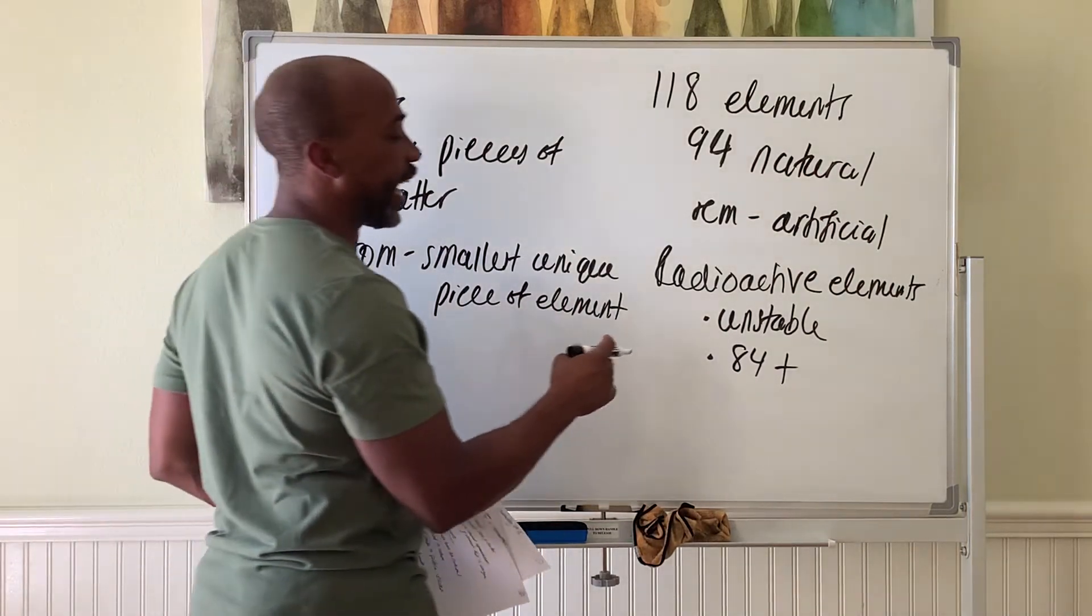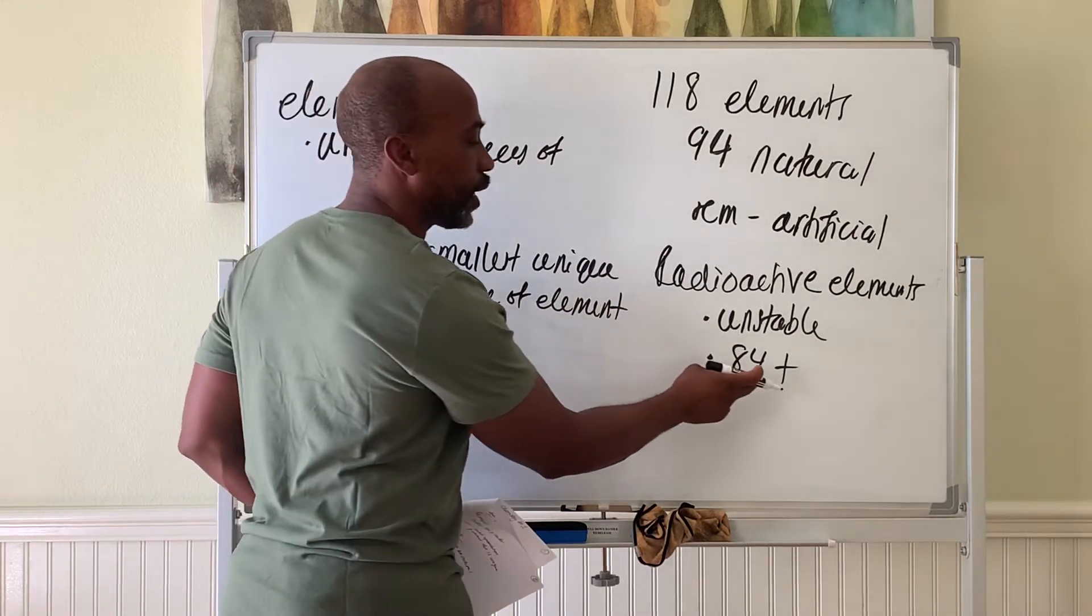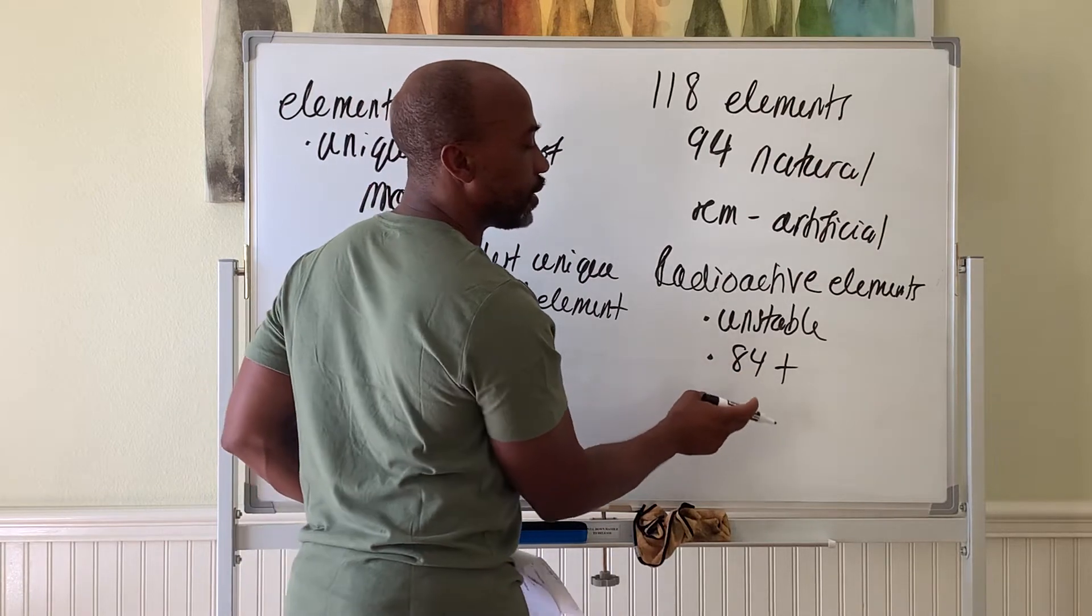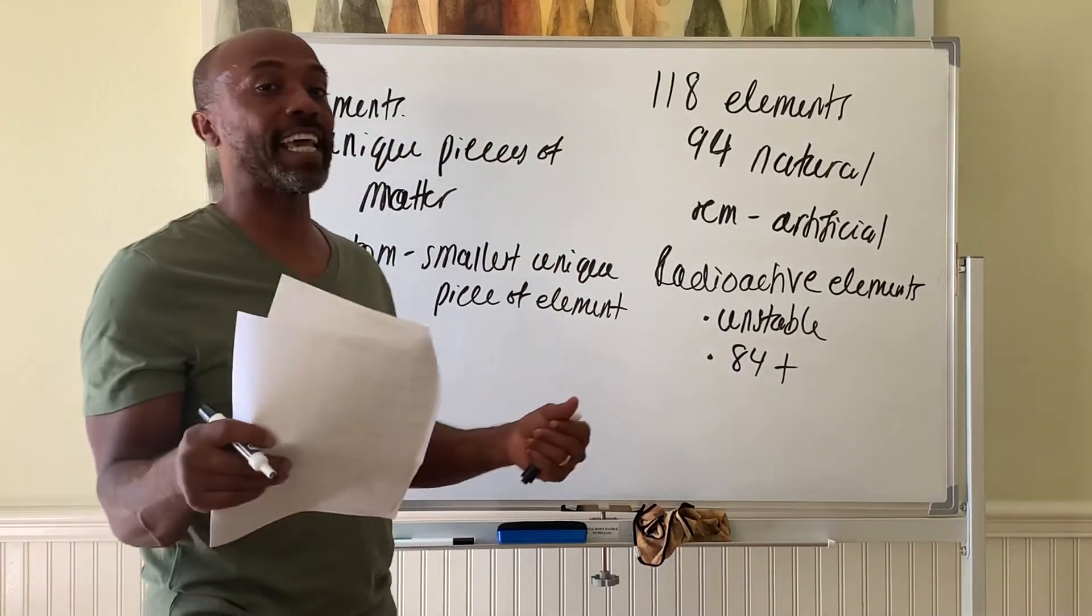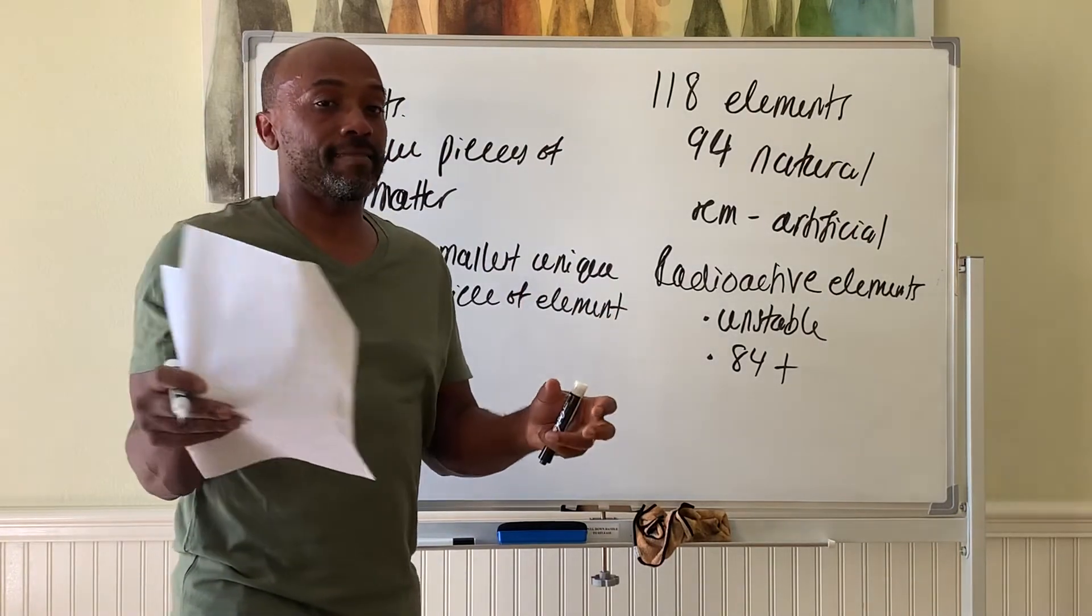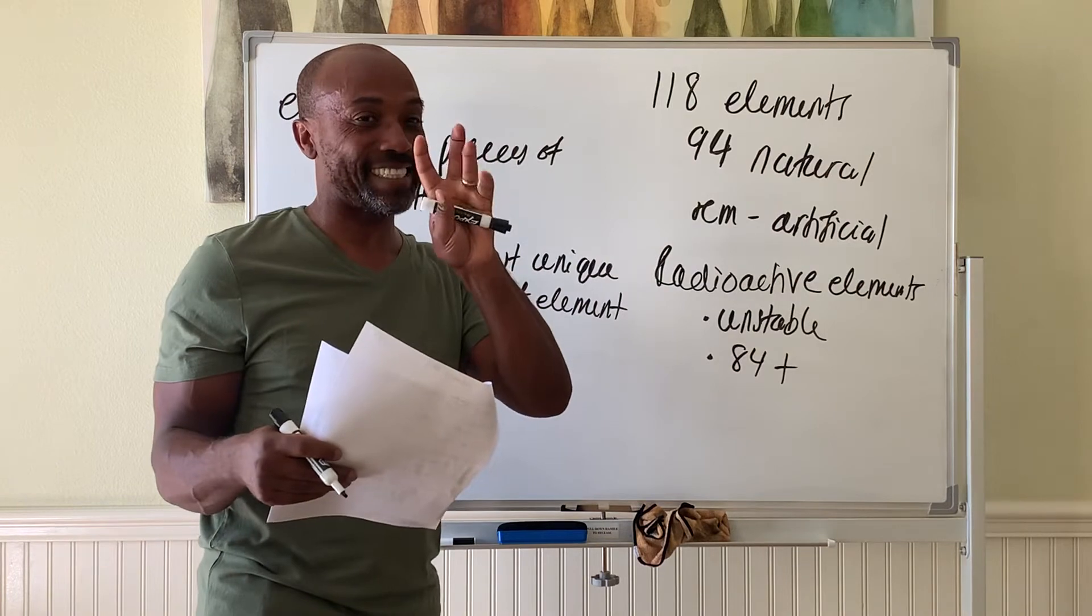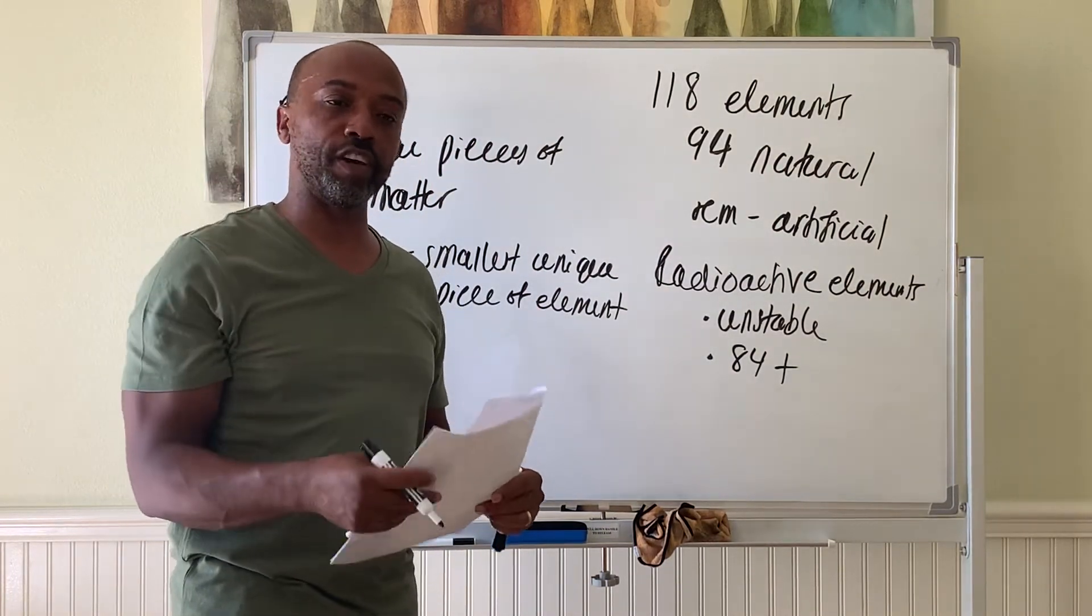When they decay, they decay to the point where they form something more stable. The bigger the number is, which means you have a lot more protons and neutrons in the nucleus, it's hard to hold them together the bigger it gets. That's why the bigger you get, the more unstable the nucleus is. It starts to spit things out to get to a more stable configuration.